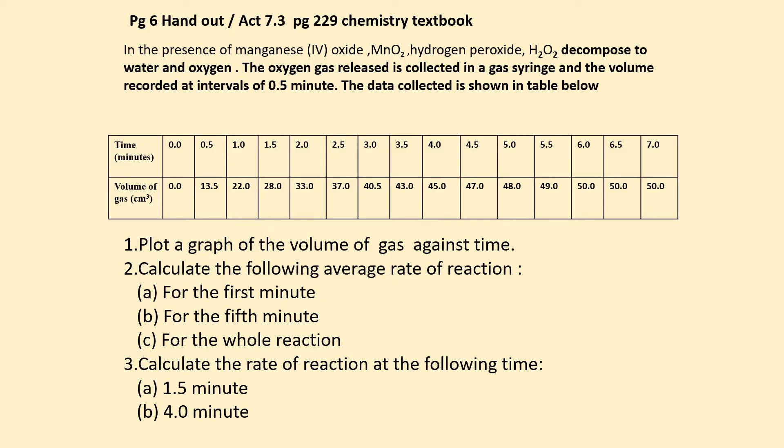In the presence of manganese oxide (the catalyst, not ingredients - it's not baking a cake), hydrogen peroxide decomposes into water and oxygen. Water and oxygen are the products. The oxygen gas is released and collected in a gas syringe, with volume recorded at half-minute intervals.